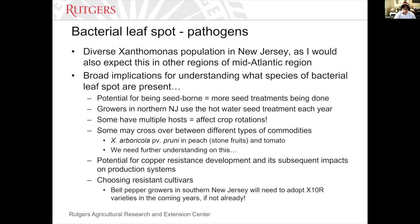Some of these species have multiple hosts. This finding about X. arboricola pathovar pruni, which we found in peach and also in tomato — we grow a lot of peaches in this state, so this may have implications for farmers in the northern part of the state that grow vegetables as well as peach and apple trees. This is very early on; we don't have a lot of information, but we need further understanding.